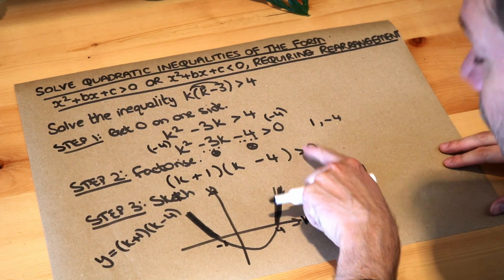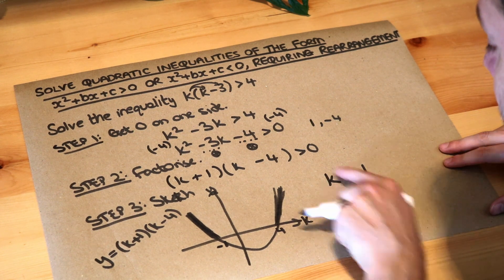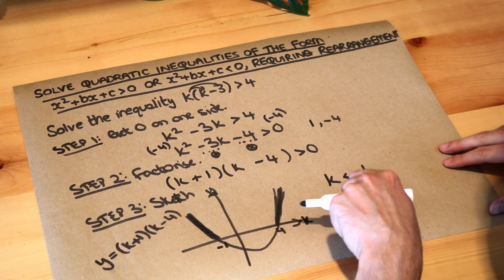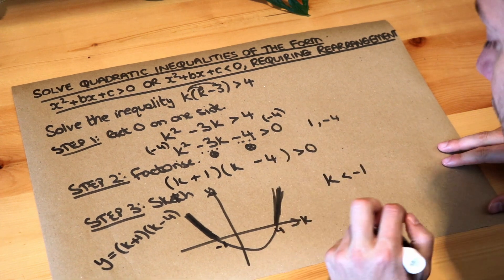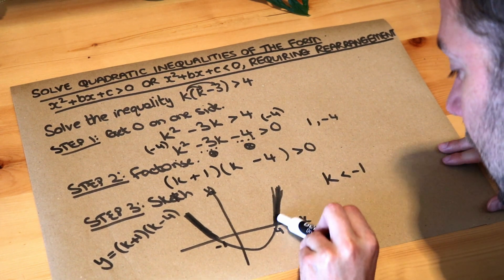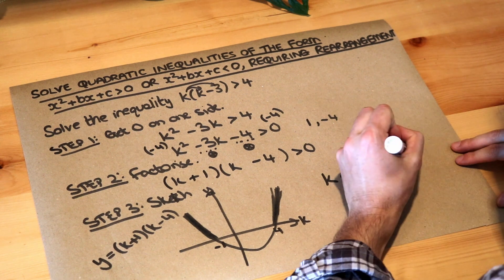And by the way, if this is greater than or less than, this should be consistent. And if this was greater than or equal to, then that should be greater than or equal to or less than or equal to. It should be consistent. And what can we say about the k here? Well the k value is greater than four.